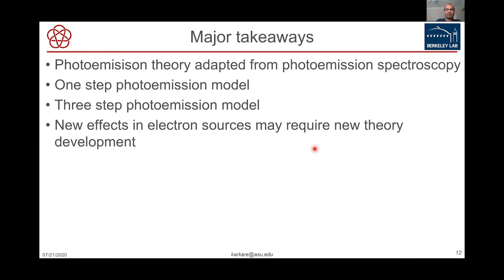This is something we are planning to explore within CBB — studying the physics of photoemission at these low energies. We have never really measured electron distributions in the range of a few to tens of milli-electron volts before, but now we have the ability to do that. Perhaps we will find a new regime in photo emission and also in photo emission spectroscopy. In conclusion: we saw how photoemission theories for electron sources are adapted from spectroscopy, reviewed the one-step model which is more accurate but computationally demanding, and the three-step model which is more practical. We also saw new effects possible in photoemission electron sources which may require new theory development.